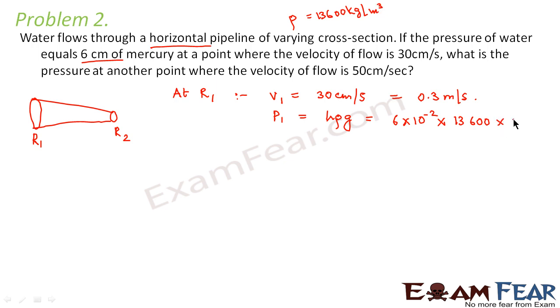So this is density of mercury into G is 9.8 meter per second square. So this comes out to be 7997 newton per meter square. So the velocity and the pressure at R1 are as follows.